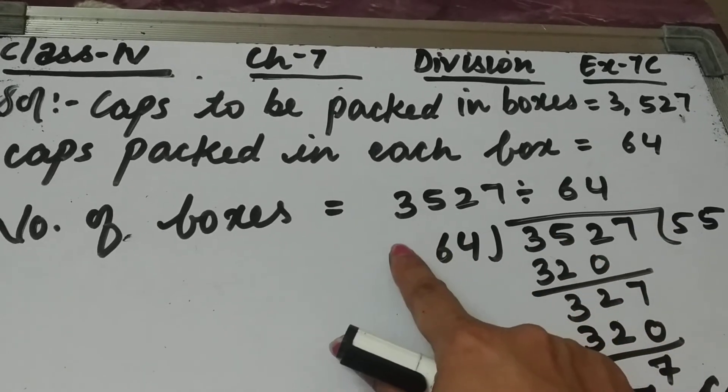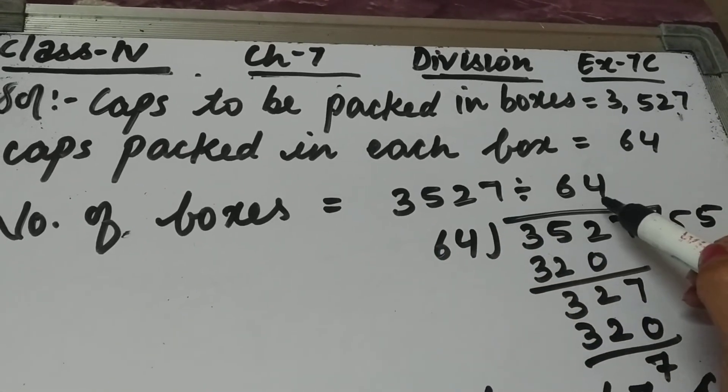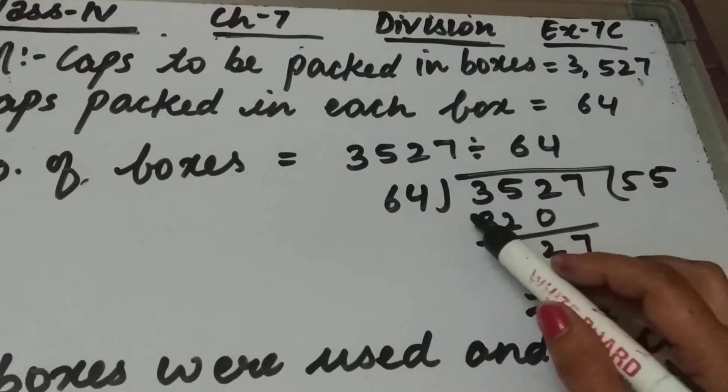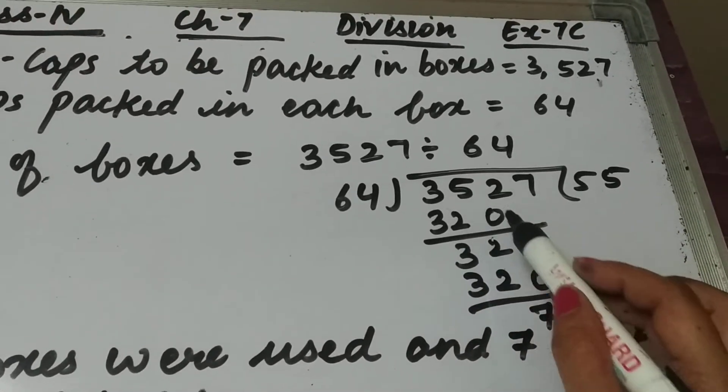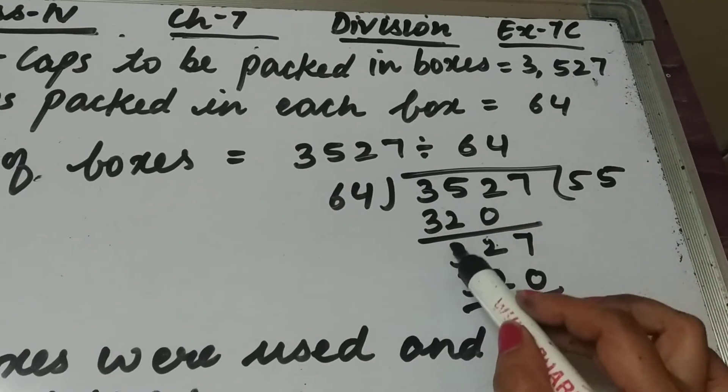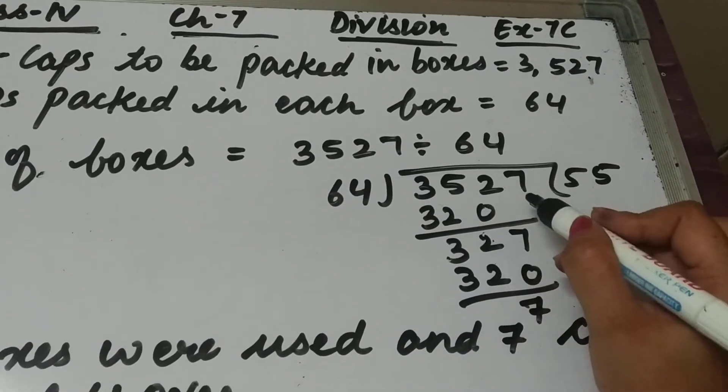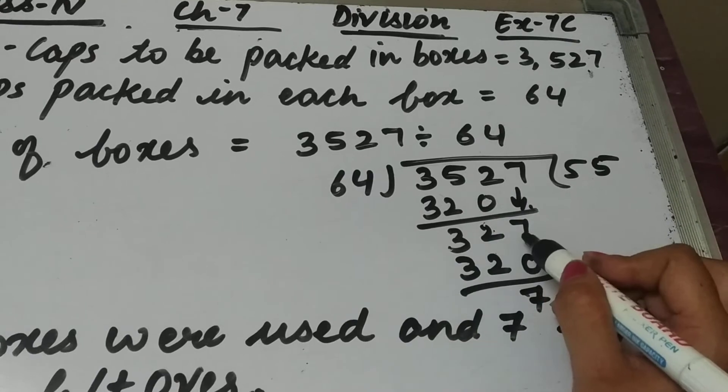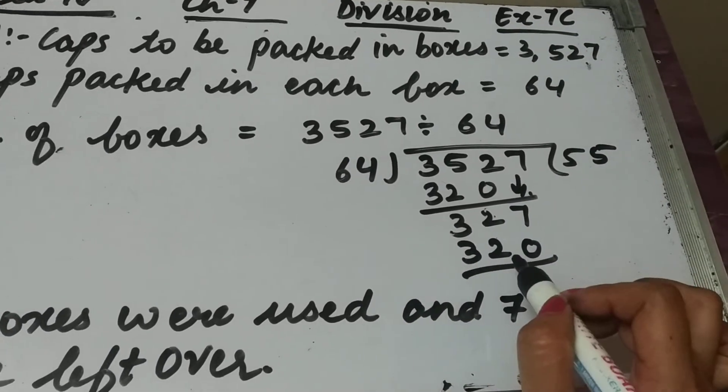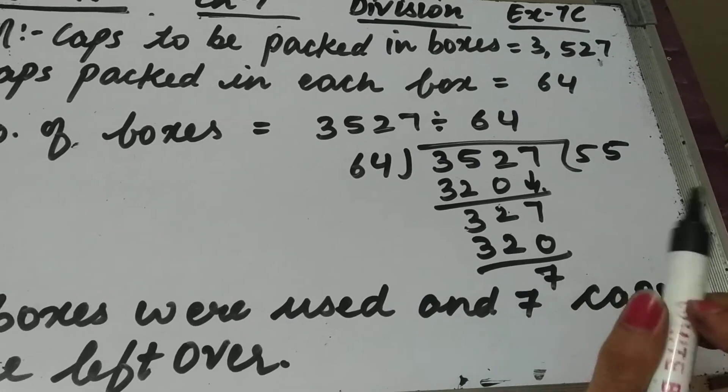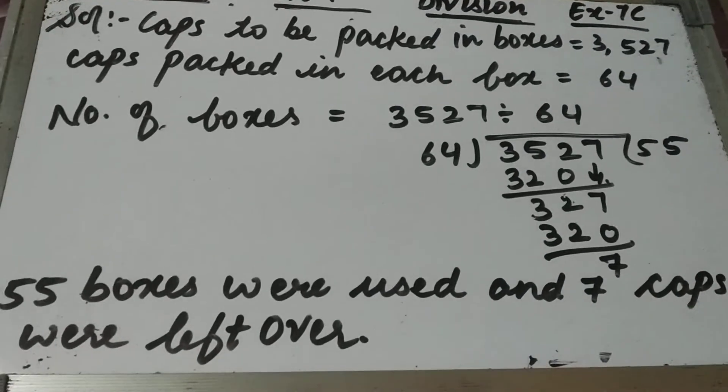So when we divide, 64 times 5 is 320. Subtract these two: 2 minus 0 is 2 and 5 minus 2 is 3. And this 7 will come down and this will become 327. So 64 fives are 320 and remainder is 7.